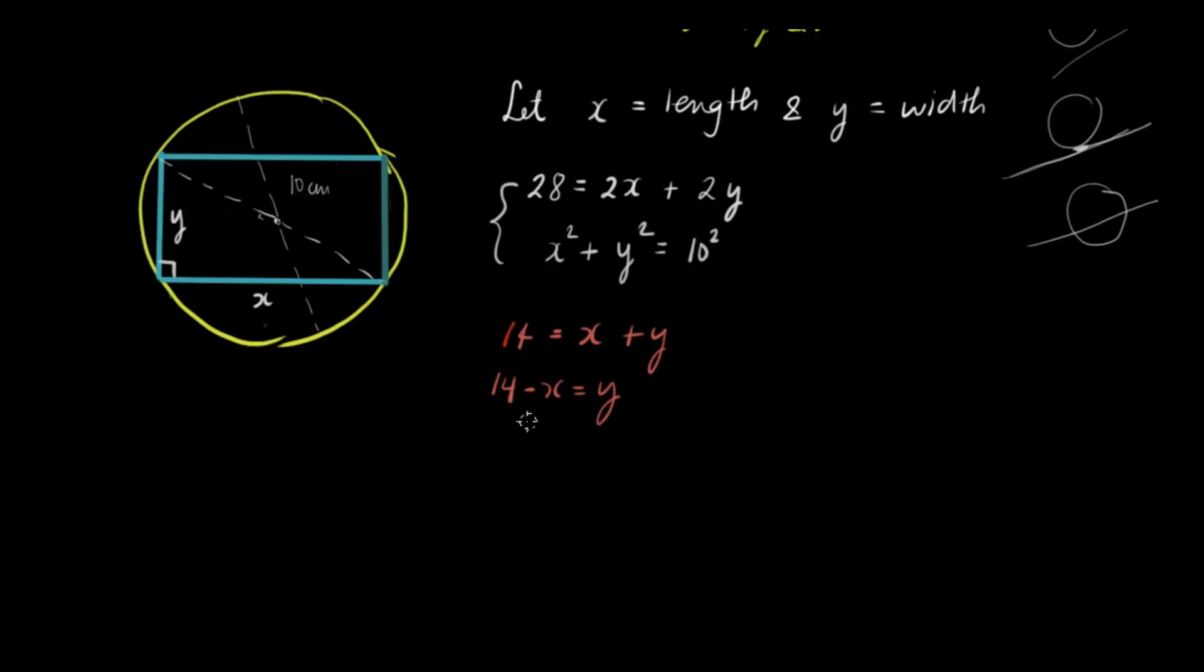So we have a value of y here which is 14 minus x. We can substitute this in the second equation to get an equation with only x. So let's substitute this for y in the second equation.